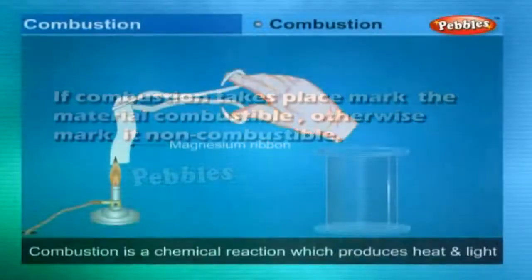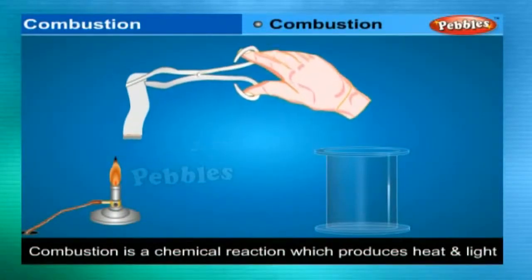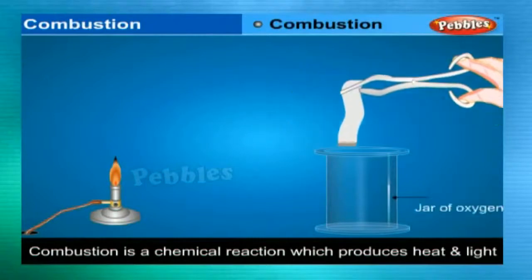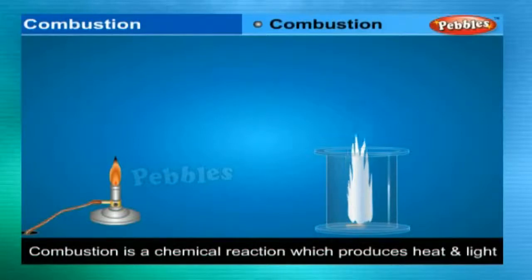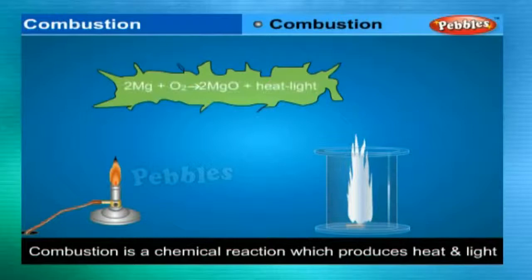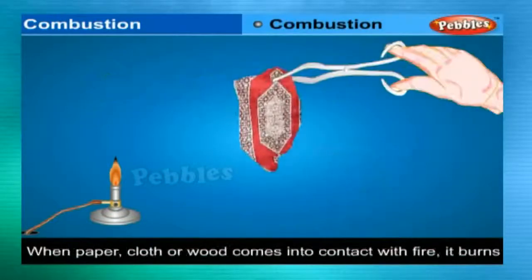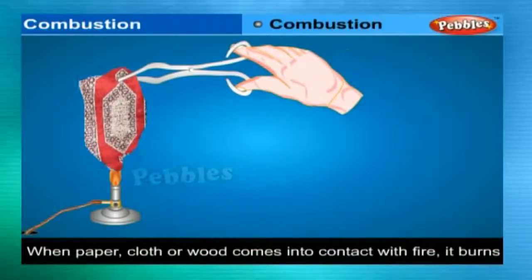Supporters of combustion: Light a candle and invert a glass over it. The candle burns for a little while and then is put out. The candle burns by taking the oxygen from the air. Nitrogen and carbon dioxide do not support combustion. This principle is used in electric bulbs to prevent the filament from burning. It is not only oxygen which supports combustion, but oxides of nitrogen and chlorine also support combustion.